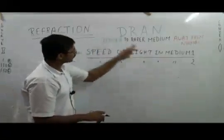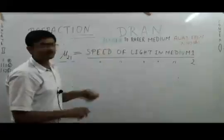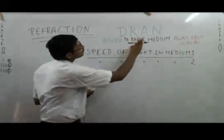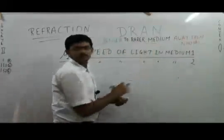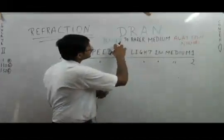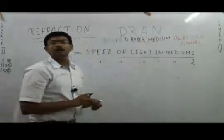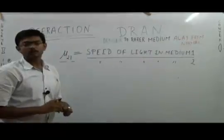Keep in mind that if light comes from rarer to denser medium, then it will be reflected towards the normal. From denser to rarer, away from the normal, and from rarer to denser, towards the normal.